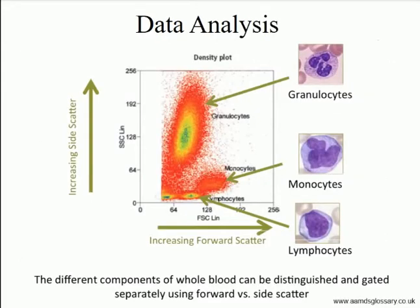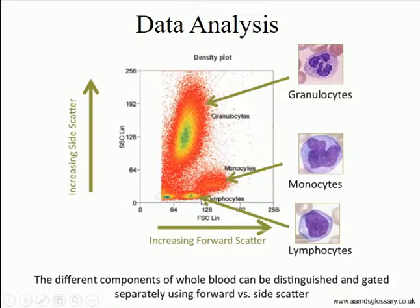The dot plot has forward scatter and side scatter on the two axes. The dot tells you if forward scatter is higher or lower and if side scatter is higher or lower. For example, an increment in side scatter means more granularity — granulocytes are smaller but very complex — while lymphocytes are simple and not very large.